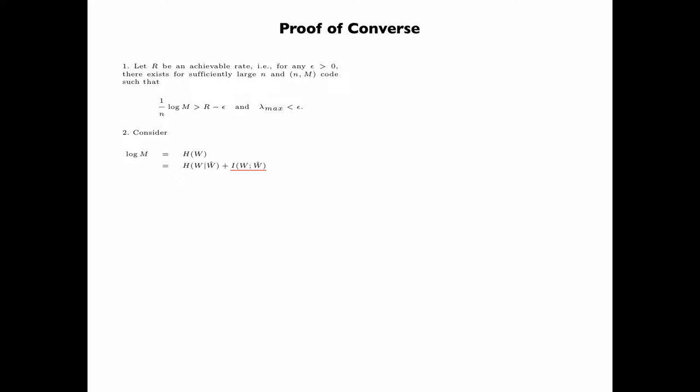Now consider log M equals entropy of W. This is so because the message is chosen uniformly from the message set. This can be written as the entropy of W given W-hat, plus the mutual information between W and W-hat. The mutual information between W and W-hat, by the data processing theorem, is less than or equal to the mutual information between X and Y.